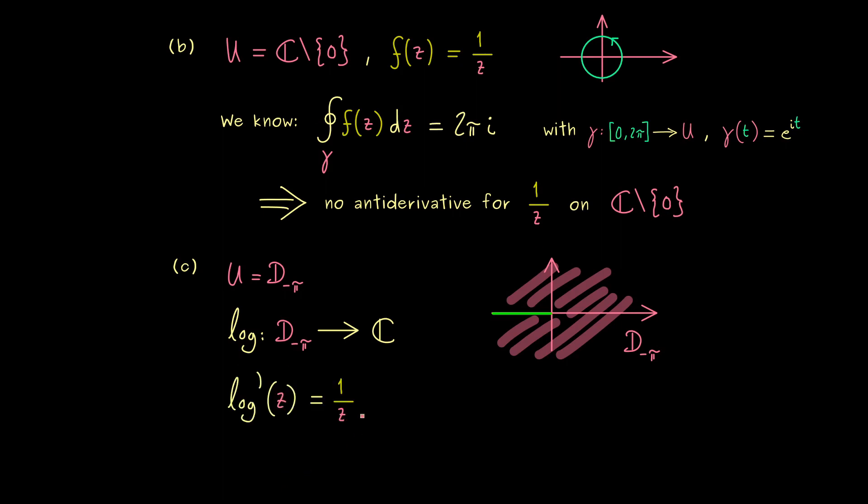So this is not hard to show and indeed it shows us that the logarithm is an anti-derivative of 1 over z. However please note now the domain is smaller than the one before. In particular such a curve as this one is not possible anymore. In other words we cannot enclose 0 with the curve.